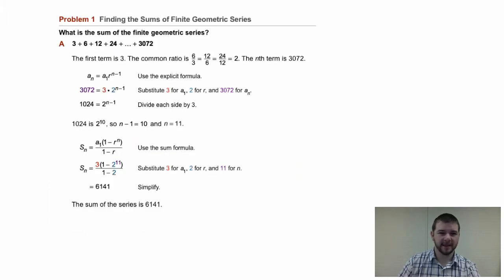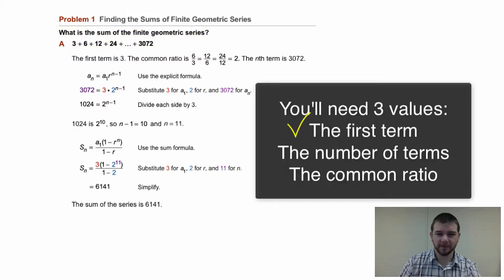Example problem 1, finding the sums of finite geometric series. What is the sum of the finite geometric series? 3 plus 6 plus 12 plus 24, skip a few, plus 3072. So we need to know the first term, we need to know the common ratio, and we need to know how many terms are in the series.